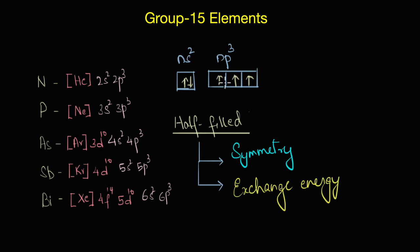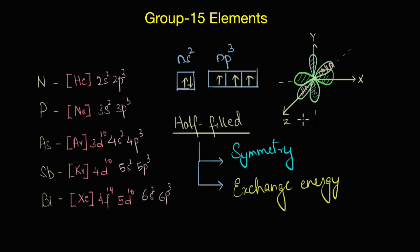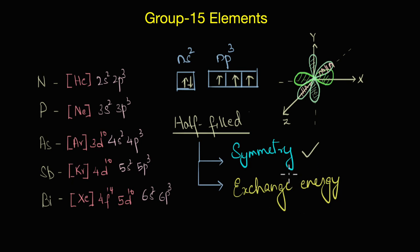We have one electron in each of the px, py, and pz orbitals. Having equal distribution of electrons in these orbitals decreases the overall energy of the system, and by the rule of nature, symmetry almost always gives extra stability.